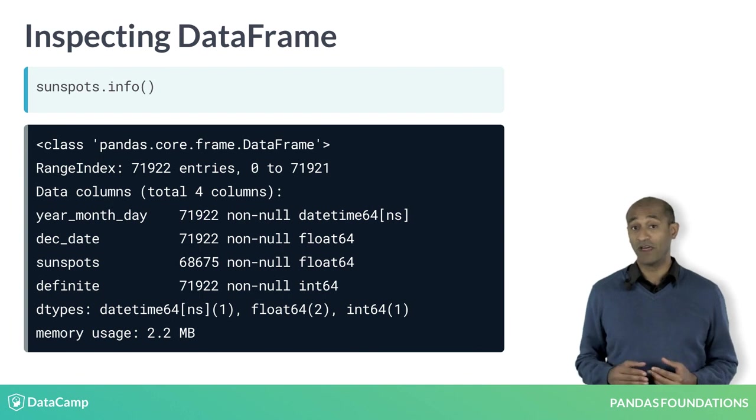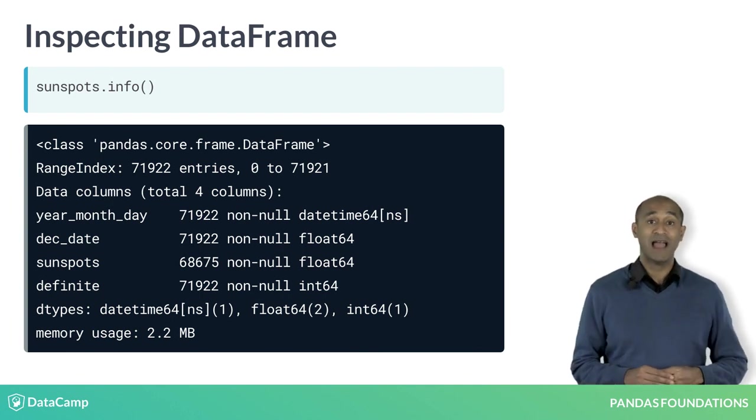In fact, using the info method, we see year, month, day column has entries of type date time 64.